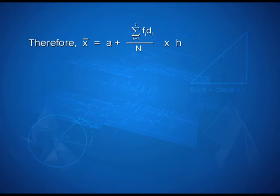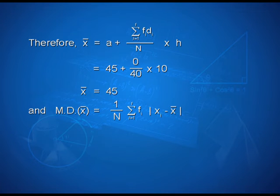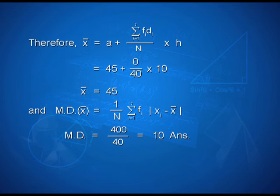Therefore, x-bar = a + (summation of f_i * d_i from i = 1 to 7) / n * h = 45 + (0 / 40) * 10, which means x-bar equals 45. And the mean deviation about the mean = (1/n) * summation of f_i * |x_i - x-bar| = 400 / 40 = 10.